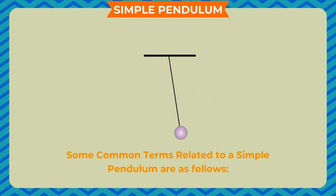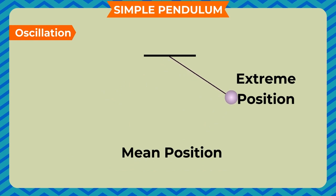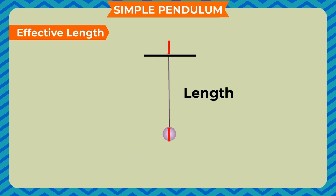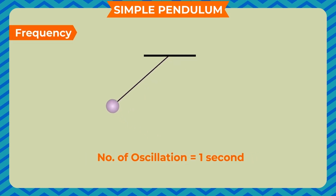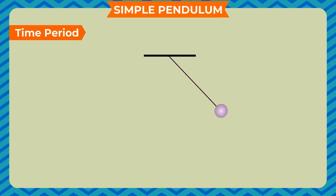Some common terms related to a simple pendulum are: Oscillation - One complete back and forth movement of a pendulum from mean position to extreme and back to mean position. Effective length - The length of the string from the fixed position to the center of bob. Amplitude - The distance between the mean and extreme position is called amplitude. Frequency - The number of complete oscillations made in one second is said to be frequency. Time period - The time taken for one complete oscillation is said to be time period.